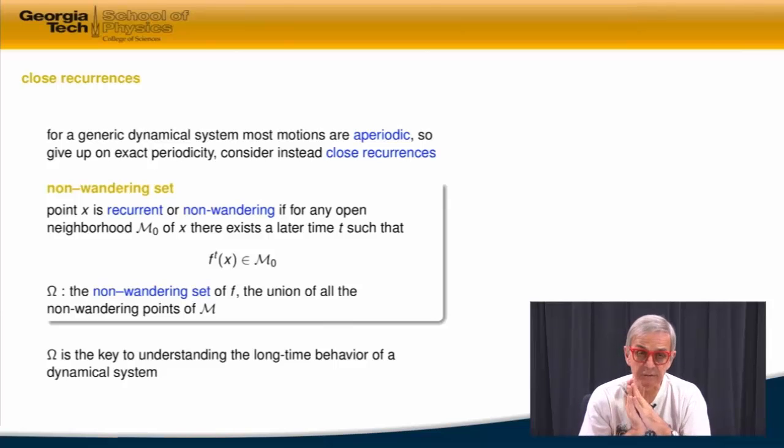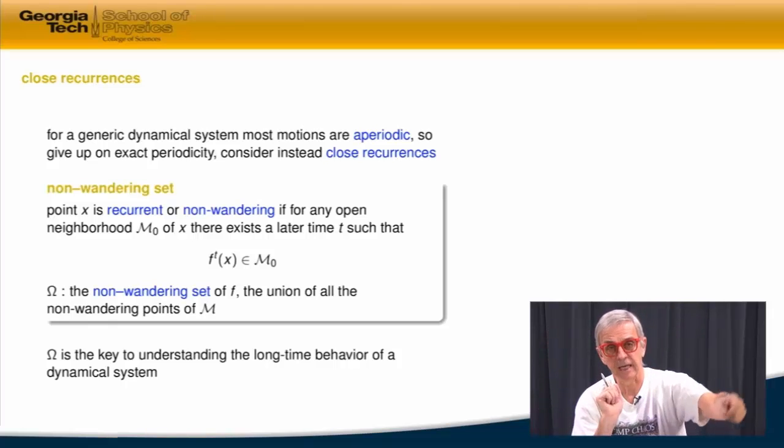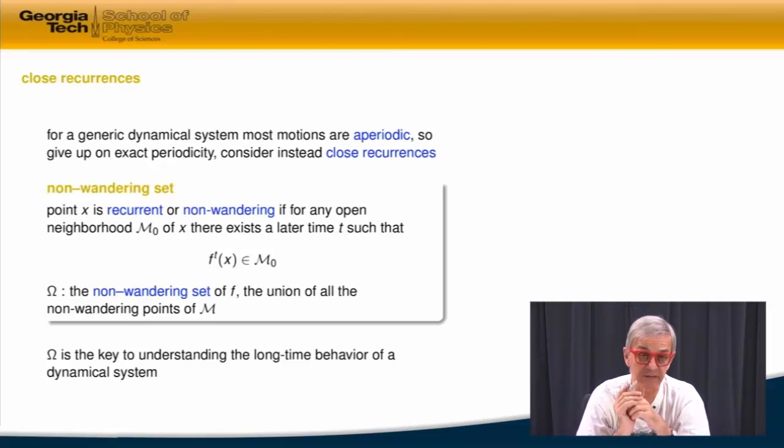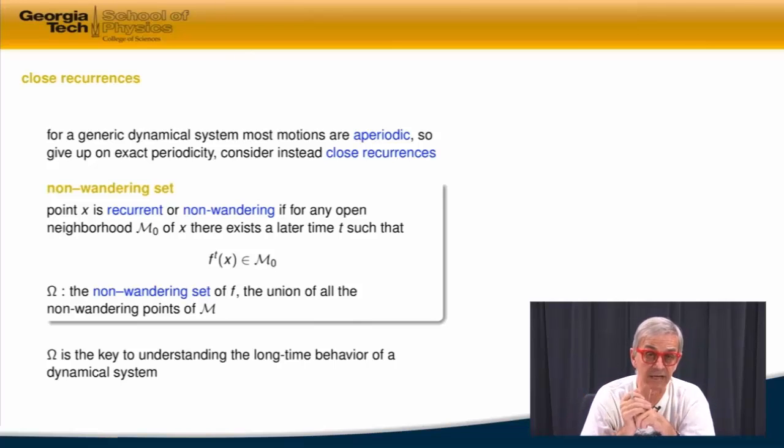Once you start thinking about recurrences, you realize there are two kinds of behaviors that you care about. There are some points which wander. Wandering means I start some place, for example, I start on the top of a hill and the soccer ball rolls down. And it does something, but guaranteed never to roll back to the top of the hill because it's lost some energy to the friction. So that state, while this is part of a state space, I'm allowed to start on the top of the hill, it will be part of a wandering set. Initial points which start out as transients are never revisited.